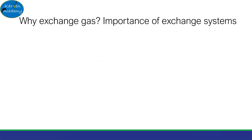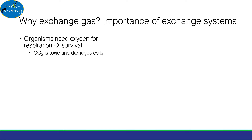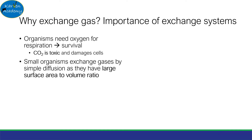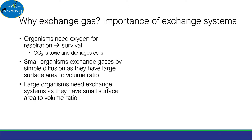So why do we need gas exchange, and what is the importance of exchange systems? Firstly, organisms need oxygen for respiration, which provides energy needed for survival. Moreover, carbon dioxide is toxic and damages our cells. Small organisms exchange gases by simple diffusion because they have a large surface area to volume ratio, so they don't really need exchange systems. However, large organisms need exchange systems to meet their metabolic needs, as they have a small surface area to volume ratio.